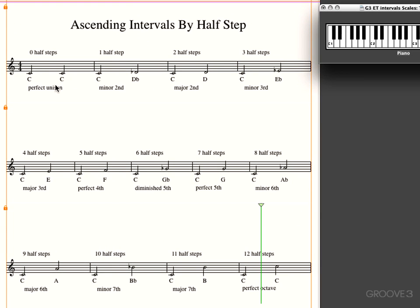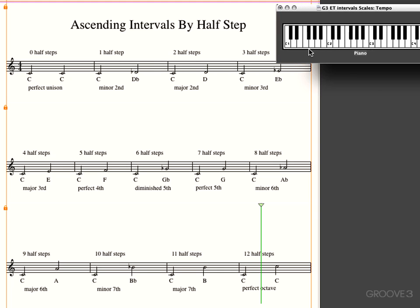And this is intervals going up and we arguably could play the same note twice and it would be a unison. In theory terminology, classical theory terminology, perfect unison. If you go from a C up one half-step, C to D-flat, you get a minor second.